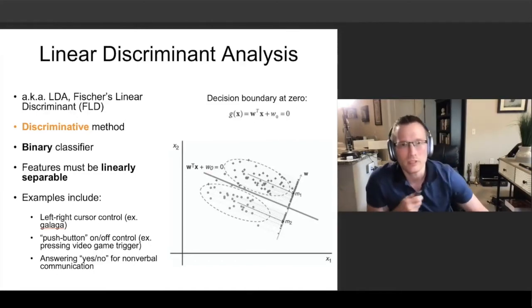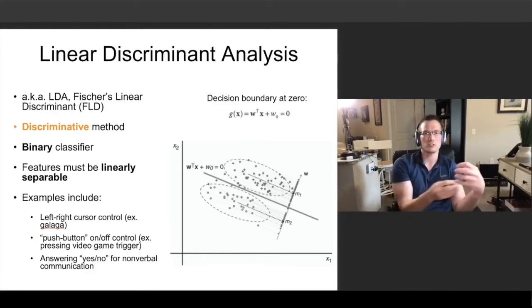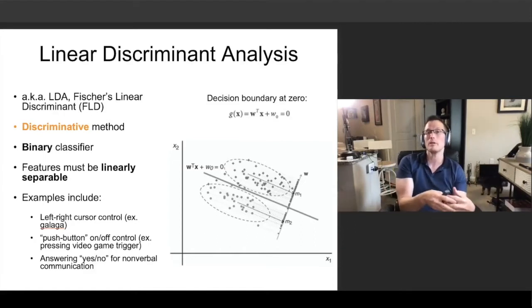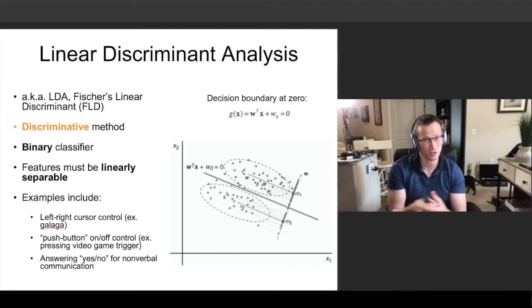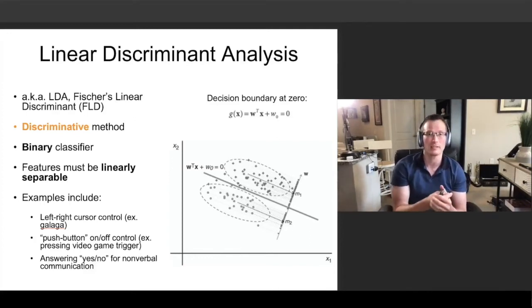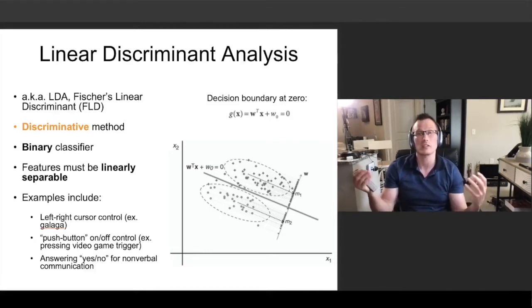Some important considerations in this, the features need to be linearly separable. So, if those data clusters are all kind of interspersed amongst each other, there could be some non-linear projection that would separate them, and we will talk about that in our discussion of support vector machines. But in this case, you need to have clearly linearly separable data for this to work. Your classes have to be very, very obviously different.